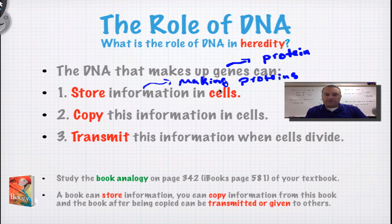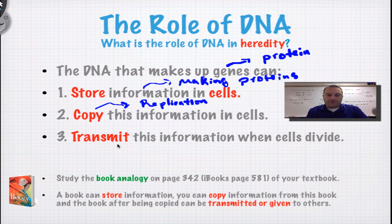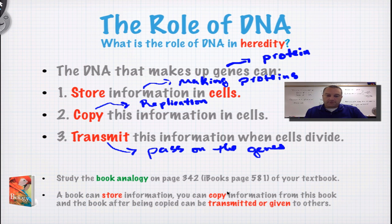DNA stores information in cells — it's the information for making proteins. It will copy itself in a process called replication. We will be covering this in another series of screencasts coming up. And then you can transmit it when cells divide — in other words, you pass on the genes to the next generation. Make sure you look at page 342 of your book, or page 581 if you have the iPad version.